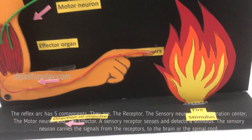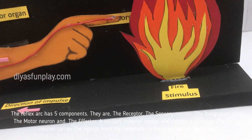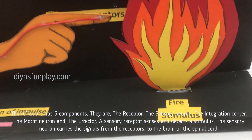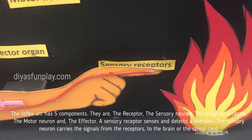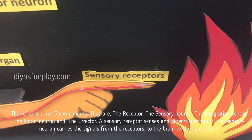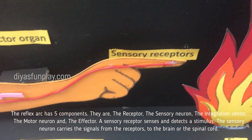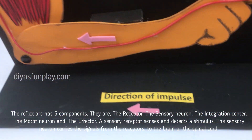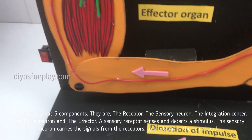The reflex arc has five components. They are the receptor, the sensory neuron, the integration center, the motor neuron, and the effector.